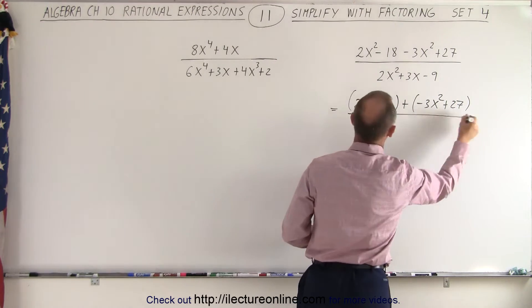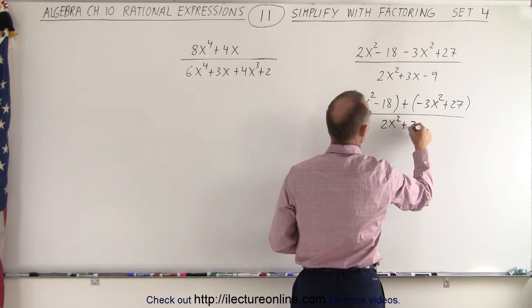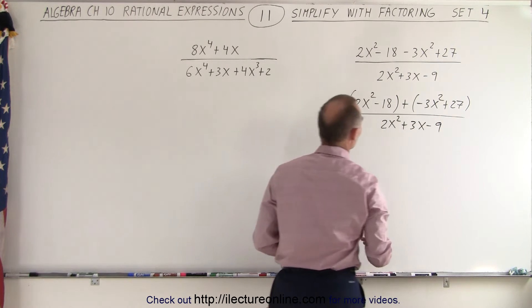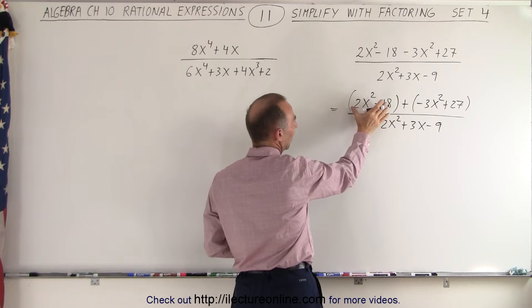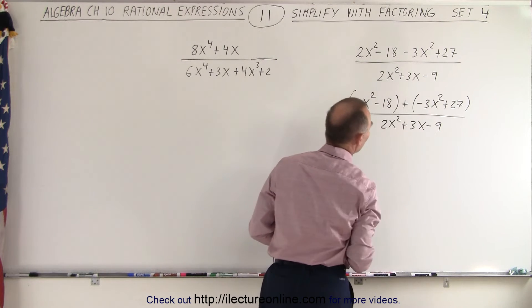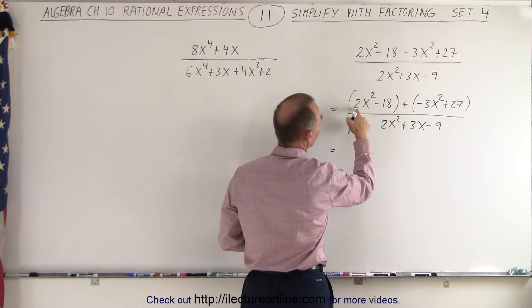In the denominator, we still end up with 2x squared plus 3x minus 9. So now we're going to factor out something common out of this group and something common out of this group. So when we do that, here, notice we can probably factor out a 2.